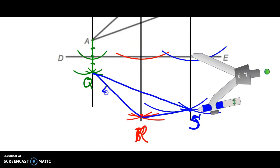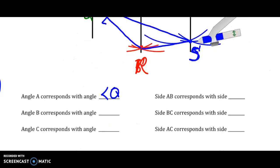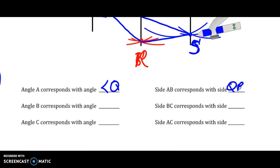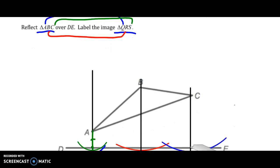So angle A corresponds with angle Q. Side AB corresponds with QR. Angle B corresponds with angle R. Angle C corresponds with angle S. And side BC corresponds with RS. And side AC corresponds with QS. How do we know that? The important thing to note is the order that they list the points in here is the order of the correspondence here. So notice A comes first, Q comes first. B comes second, R comes second. C comes third, then S. So they are listed when they tell you the order of correspondence of the parts of the triangles.